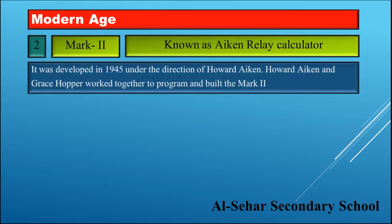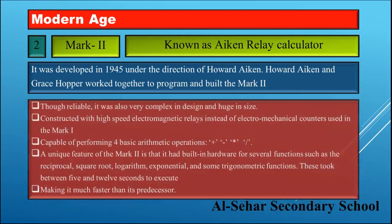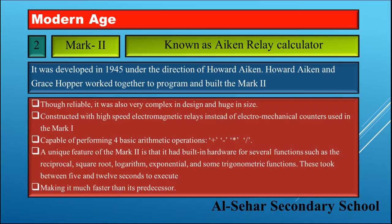Mark Two was also known as the Aiken Relay Calculator. It was developed in 1945 under the direction of Howard Aiken. Howard Aiken and Grace Hopper worked together to program and build the Mark Two. Though reliable, it was also very complex in design and huge in size, constructed with high-speed electromagnetic relays instead of the electromechanical counters used in Mark One.